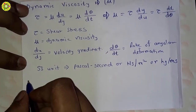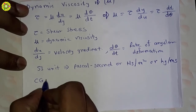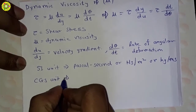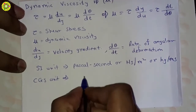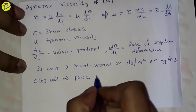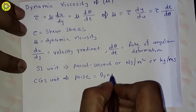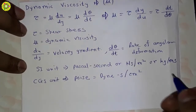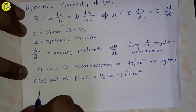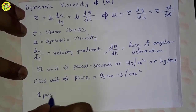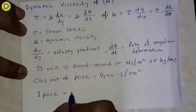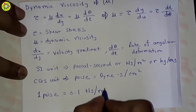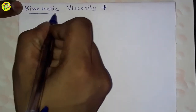The CGS unit of dynamic viscosity is poise, which is equal to 0.1 Newton second per centimeter square. One poise is equal to 0.1 Newton second per meter square.